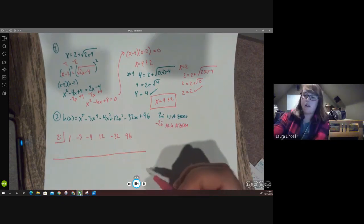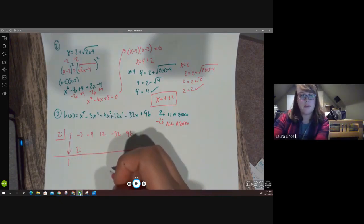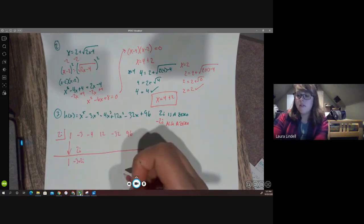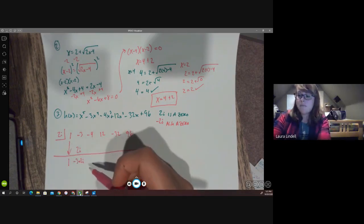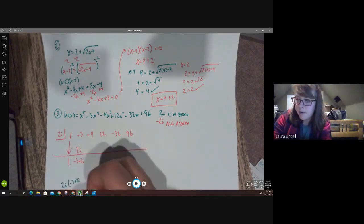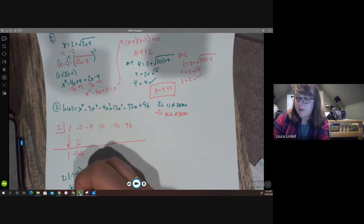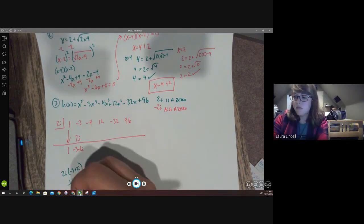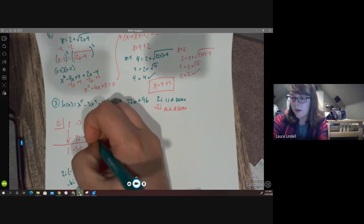So now we do our long division, our synthetic division. Bring down the 1. 1 times 2i is 2i. Then we have negative 3 plus 2i. Since I can't combine those terms, I just leave them like this. And now I have to multiply this thing by 2i. So we have, kind of do some work down here. 2i times negative 3 plus 2i. Well, that gives me negative 6i. And then we have 4i squared. But i squared, remember, is negative 1. So it's really negative 4 here minus 6i. That's what's going to go here, negative 4 minus 6i.